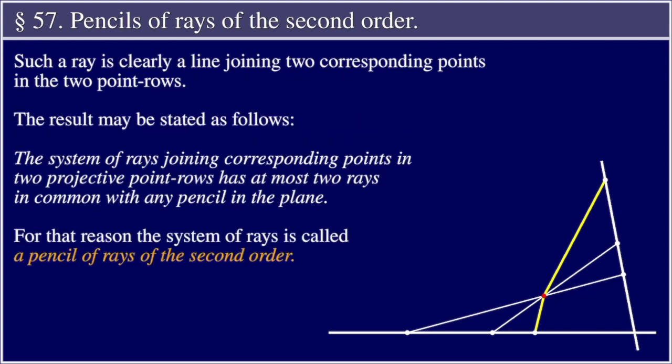Such a ray is clearly a line joining two corresponding points in the two point rows. The result may be stated as follows: the system of rays joining corresponding points in two projective point rows has at most two rays in common with any pencil in the plane.